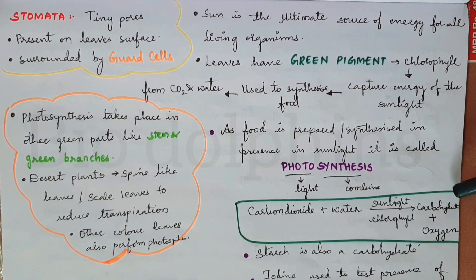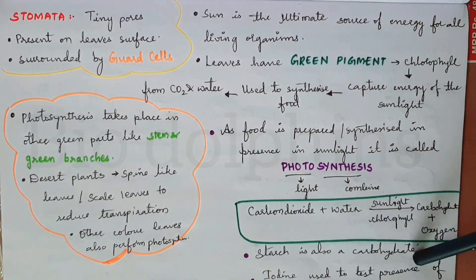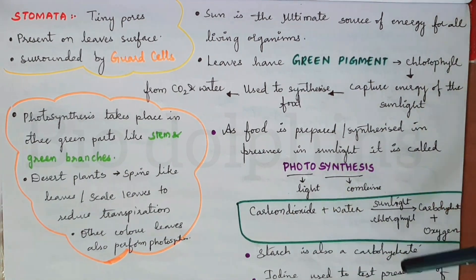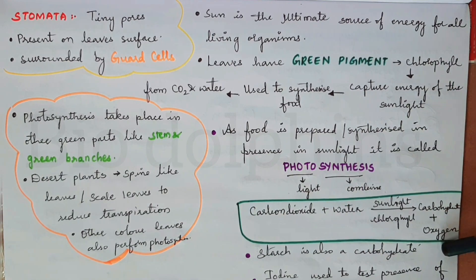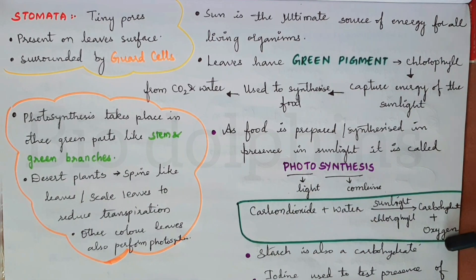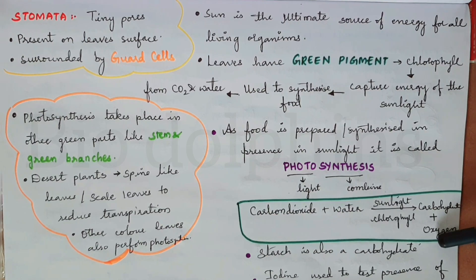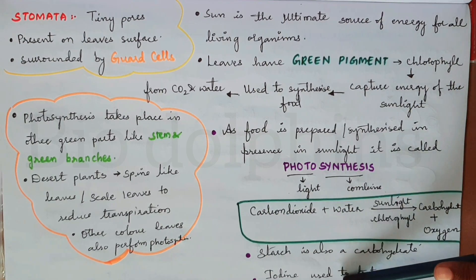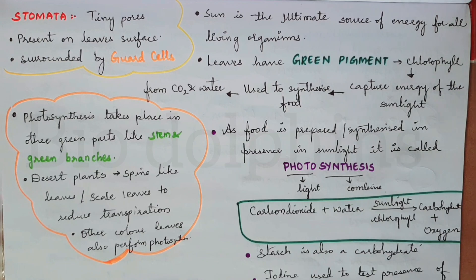This is the photosynthetic equation. Starch is also a type of carbohydrate. To test for carbohydrates in leaves, we use iodine drops, which change the leaf to a blue or black color.